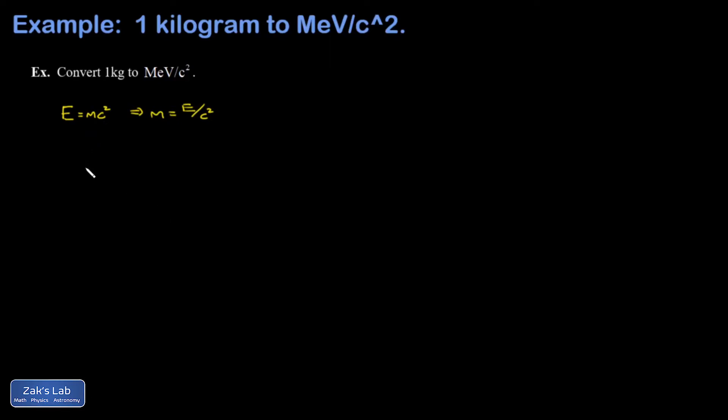We start out by finding what's the energy equivalence of one kilogram of mass and we plug in c squared. Again, c is the speed of light, approximately three times ten to the eighth meters per second. When we run the numbers on this we get nine times ten to the 16 joules.